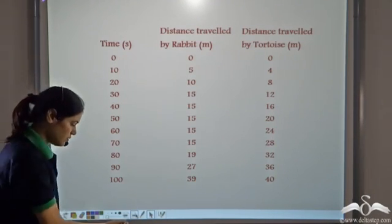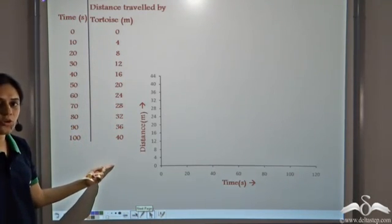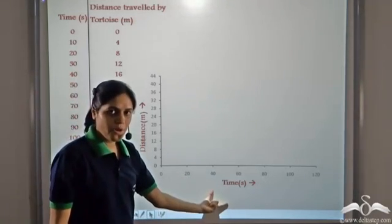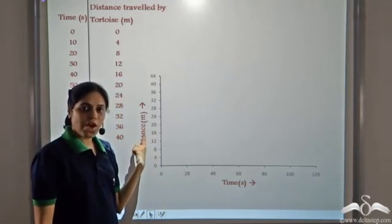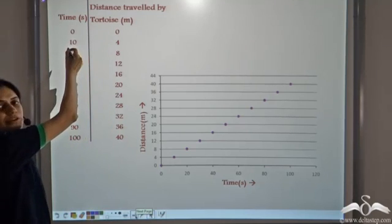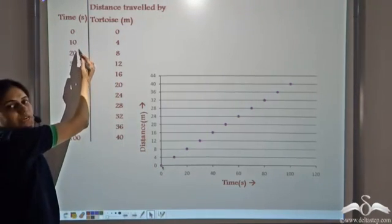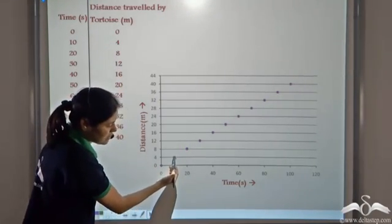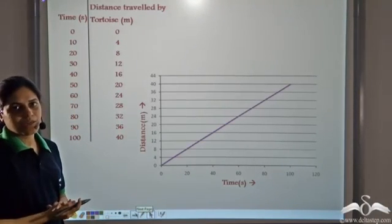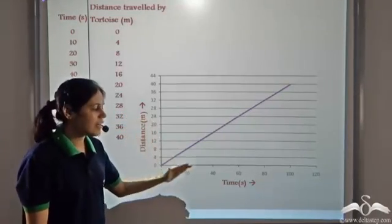Let us first plot the graph for the tortoise. This is the time taken by tortoise at different points in the race, and this is the distance travelled by tortoise in these time periods. We draw the distance-time graph for tortoise. We mark time on the horizontal axis or the x-axis, and distance travelled on the vertical axis or the y-axis. We mark the points — for example, for time equal to zero, distance travelled is zero, so we mark a point at (0, 0). At time equal to ten seconds, distance travelled is four metres. Similarly, we mark all the points and join them using a line. This is the distance-time graph for the tortoise, showing the distance travelled at different points in time.